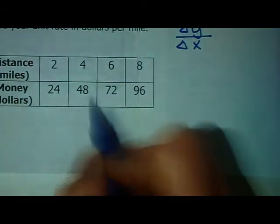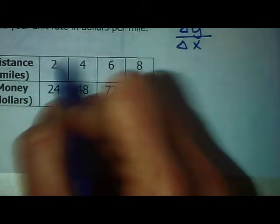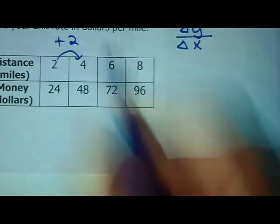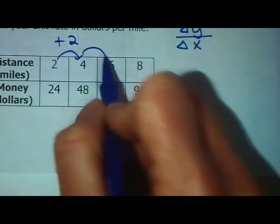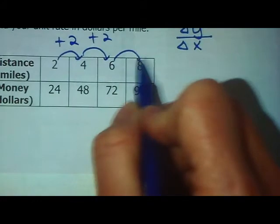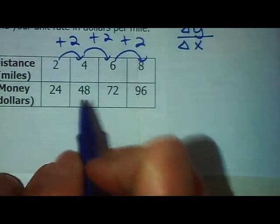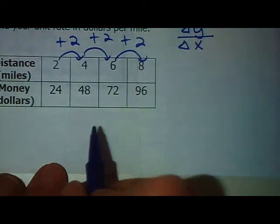If you're going from 2 to 4 you're going up 2. From 4 to 6 it's the same thing, up 2, and 6 to 8 is up 2. For the change in y from 24 to 48, maybe when you look at that you're not really sure what it's going up by.